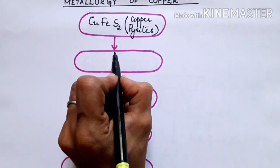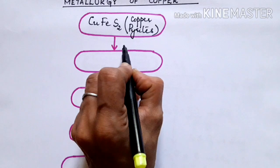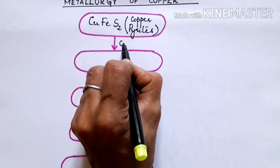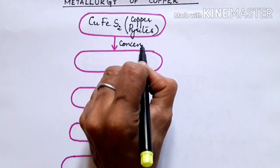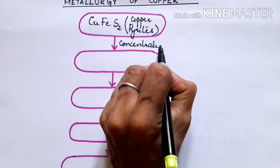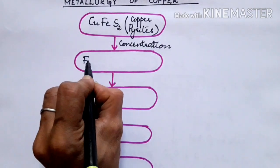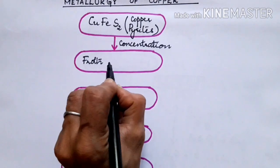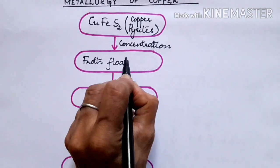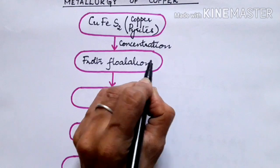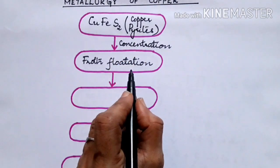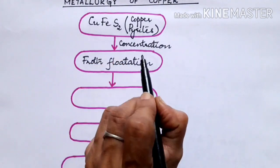This copper pyrites are first subjected to what is called concentration. It is done using the process of froth flotation. Why froth flotation? Because it is a sulphide ore.